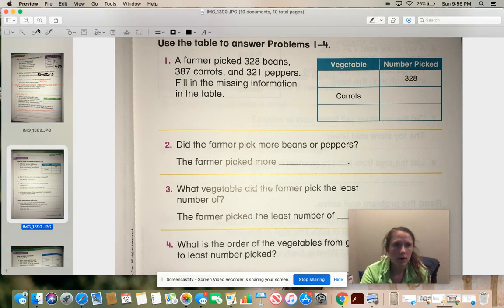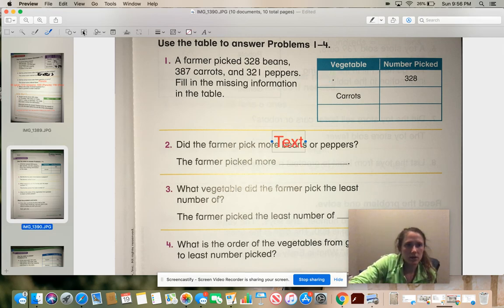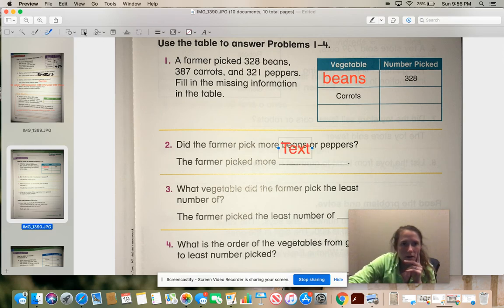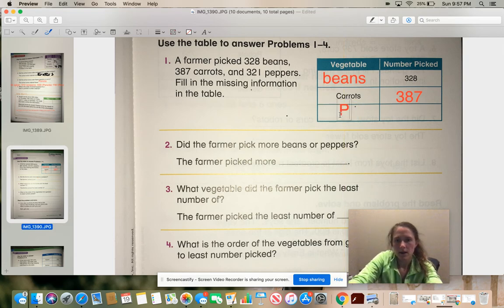You can go ahead and write across from the number of the vegetables. So 328, so that was beans. Let me do a text box. We all know how my handwriting can be with those pen tools. Beans, carrots, how many was carrots? Carrots was 387. And then the last column was peppers. And the peppers was 321.